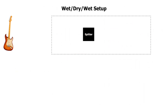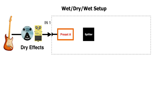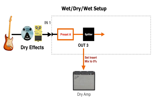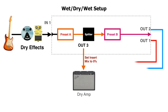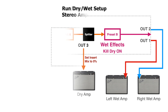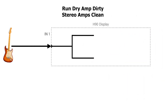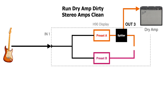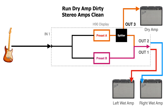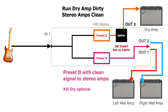The H90 has the advantage of configurability on a program basis. On one program, we could use preset A as a dry effect in front — like a wah-wah, EQ, compressor, overdrive, distortion, or pitch effect — and preset B as a time-based effect with Kill Dry on for wet effects. On another program, we can get creative by splitting a clean sound on a parallel path: one side processed with an overdrive on preset A directing it to the dry amp, while another clean path goes to a delay on preset B for the wet amp. By setting insert 1's mix to 100%, we make sure the overdriven signal does not get mixed with the clean delay path.